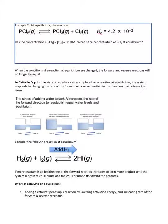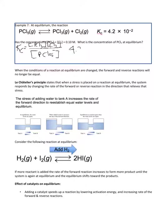Example 7: at equilibrium, PCl5 gas decomposes to PCl3 and Cl2. We're given a Kc of 4.2 times 10 to the negative 2. We're told PCl3 and Cl2 are both 0.1 molar. What is the concentration of PCl5 at equilibrium? Our Kc is going to be equal to a fraction with two products, PCl3 and Cl2, divided by one reactant, PCl5. This is a small Kc — note the 10 to the negative 2.